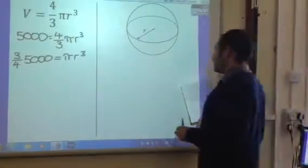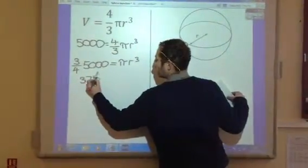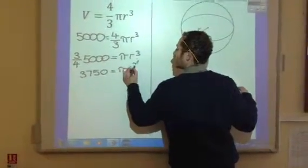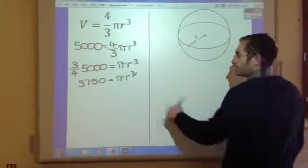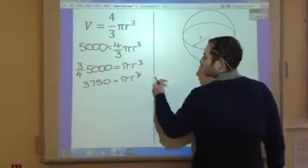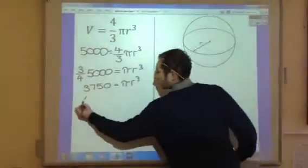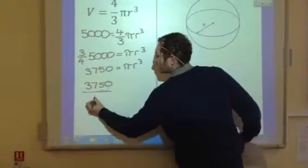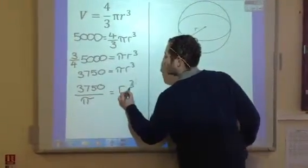Okay, so if we work down the calculators then, we've got 3750 equals π r³. We then need to get rid of the π. So this is π multiplied by r³, so we need to divide both sides by π. Right, so next line, 3750 divided by π equals r³.